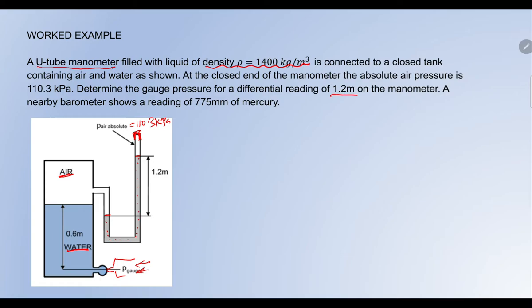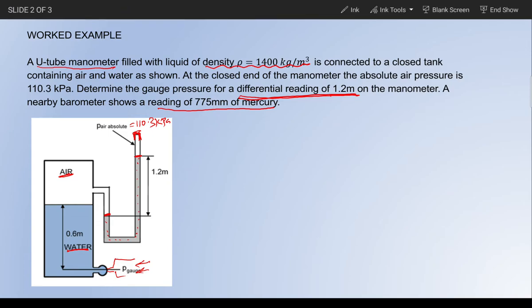For a differential reading of 1.2 meters — the differential reading is the difference between the heights of the two columns — so it is 1.2 meters. A nearby barometer shows a reading of 775 mm of mercury, which tells us the atmospheric pressure at that particular instant.